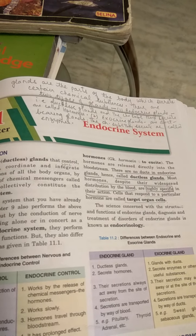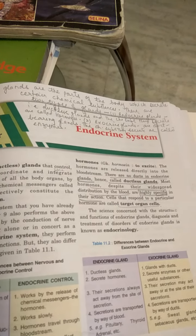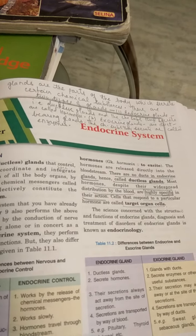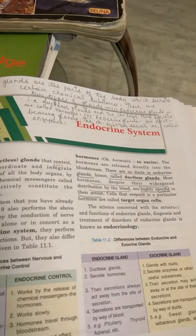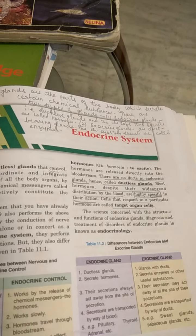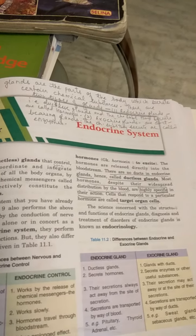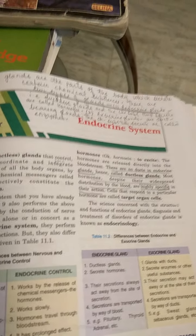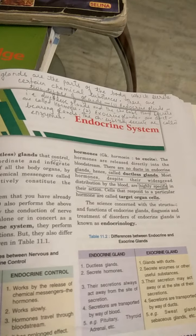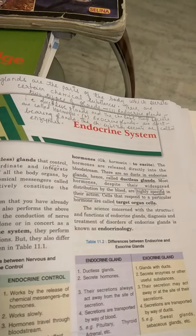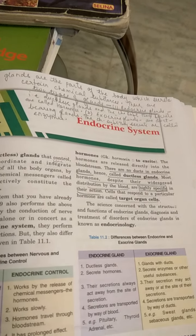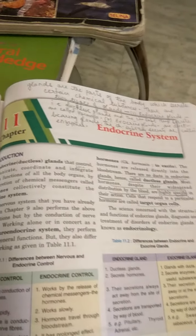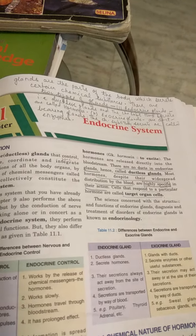Endocrine glands do not have ducts — tube-like structures — to carry their secretion to the target organ. They pour their secretion directly into the blood, and the blood carries it to the specific or target organ where the chemical substance has to act. These are called endocrine glands, which is the chapter we are going to study.